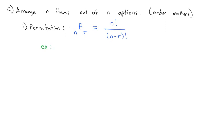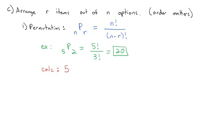For example, if I wanted to do 5 permutation 2 — in other words, I've got five things and I want to select two of them where the order matters — we would take 5 factorial divided by (5 minus 2), which is 3 factorial, to get 20. You can do this on the calculator under the probability menu. The probability menu is either under the math button on the TI-83 or 84, or there's a probability button on the TI-30. You type in the first number, go to the probability menu to select the nPr option, then enter the second number, and hit enter to get 20.